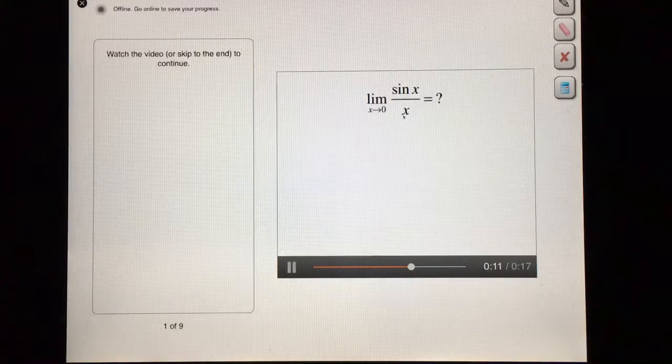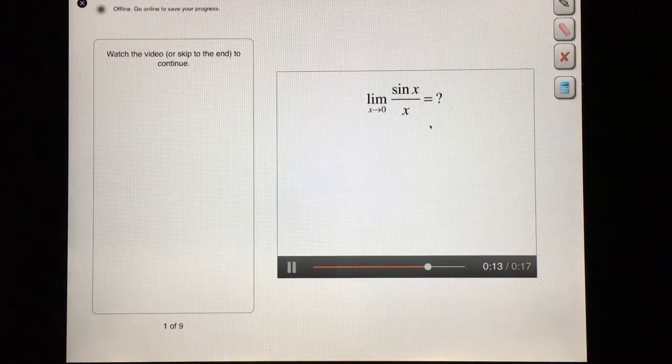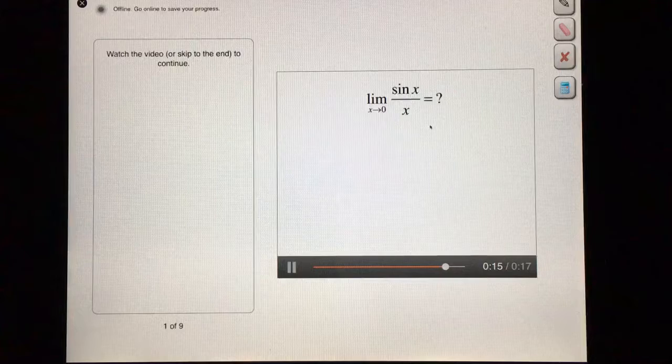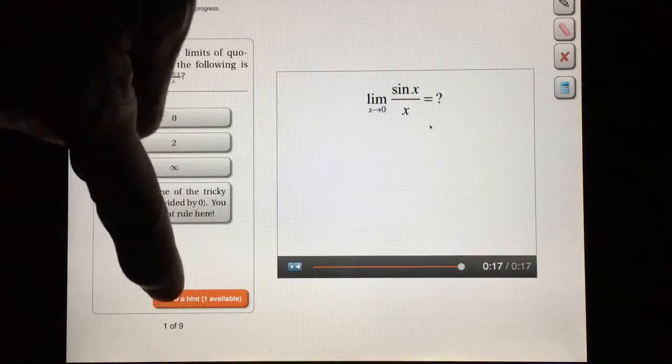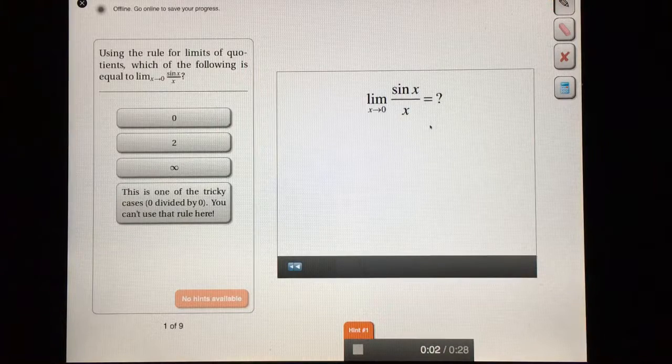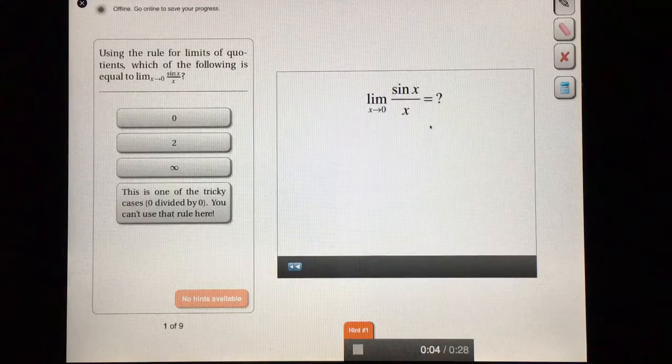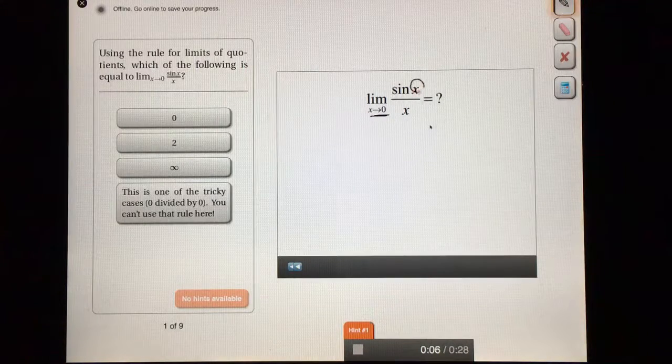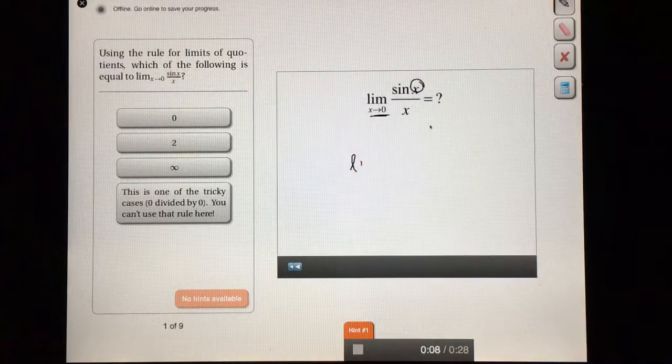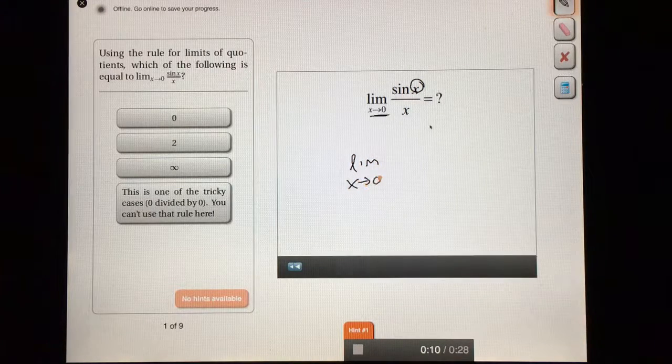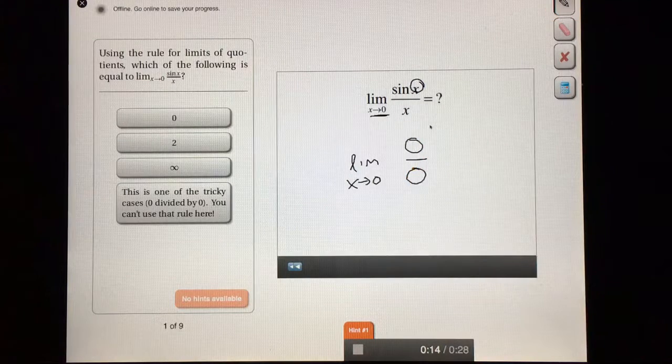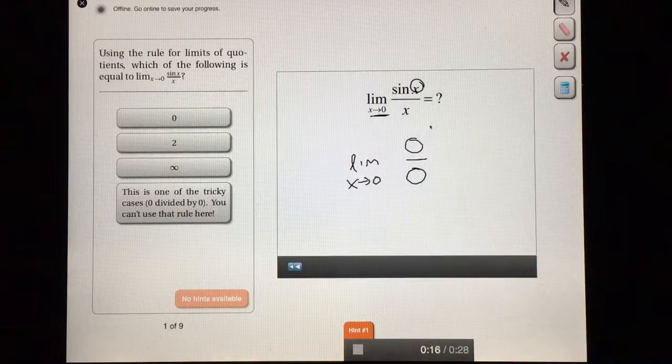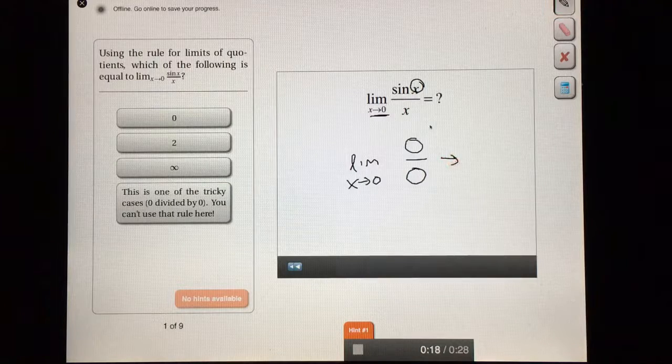This limit is the quotient of two functions, so we should be able to use the quotient rule for limits, right? Give that a shot. We have to be a little bit careful when we use the quotient rule for limits. If you try to plug in 0 for x, we end up with the limit as x goes to 0 to something that's approximately 0 over 0. And whenever we have 0 divided by 0, the quotient rule doesn't work.